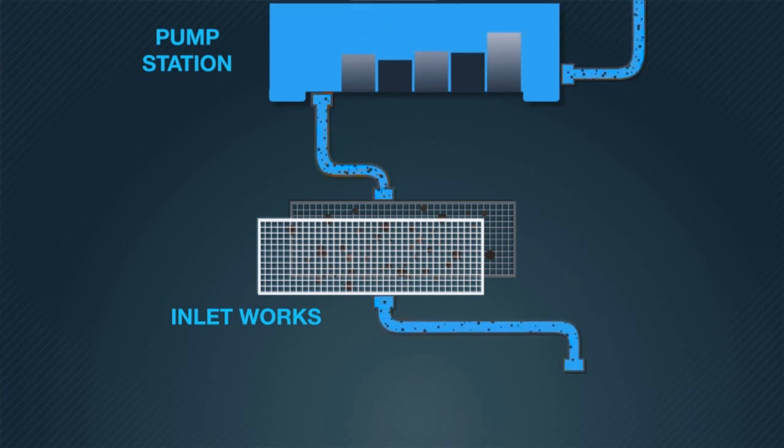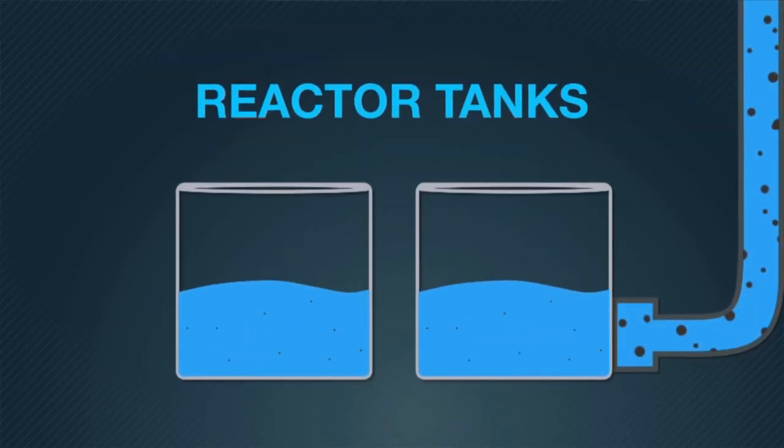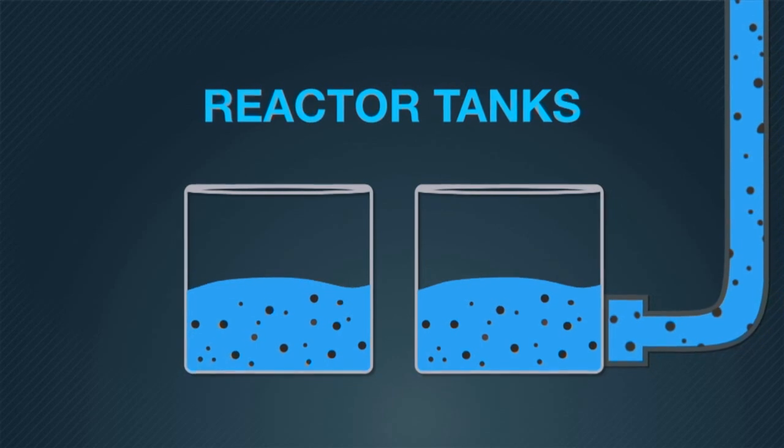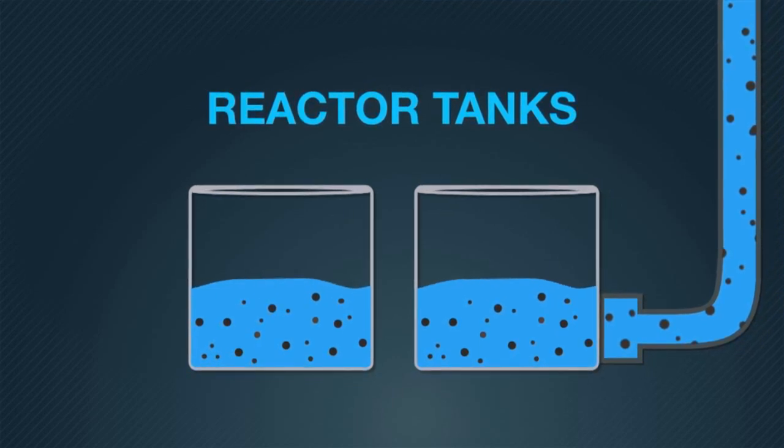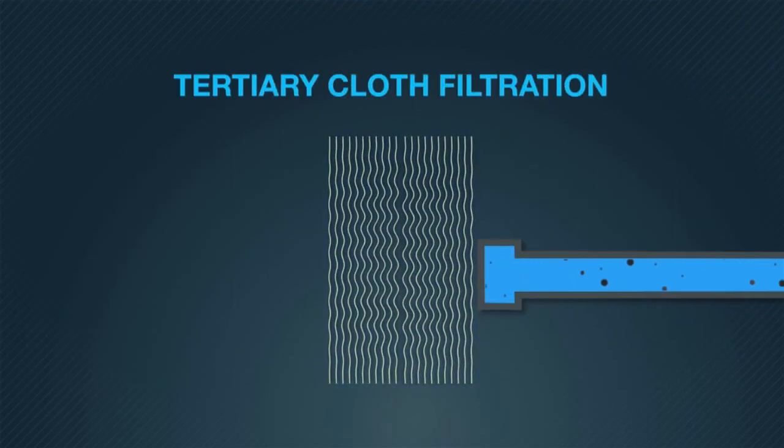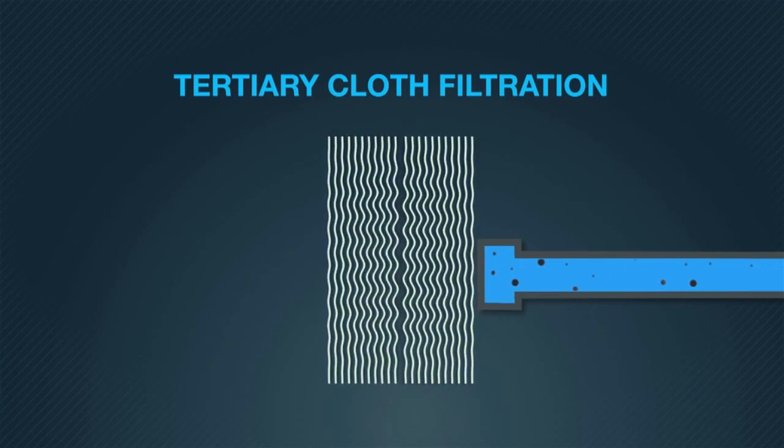Though sewage is mostly made up of water, the solid part of sewage, or biosolids, are separated from the water here, where the biosolids settle at the bottom of these reactor tanks. The wastewater is then put through a filter to remove any remaining solids.